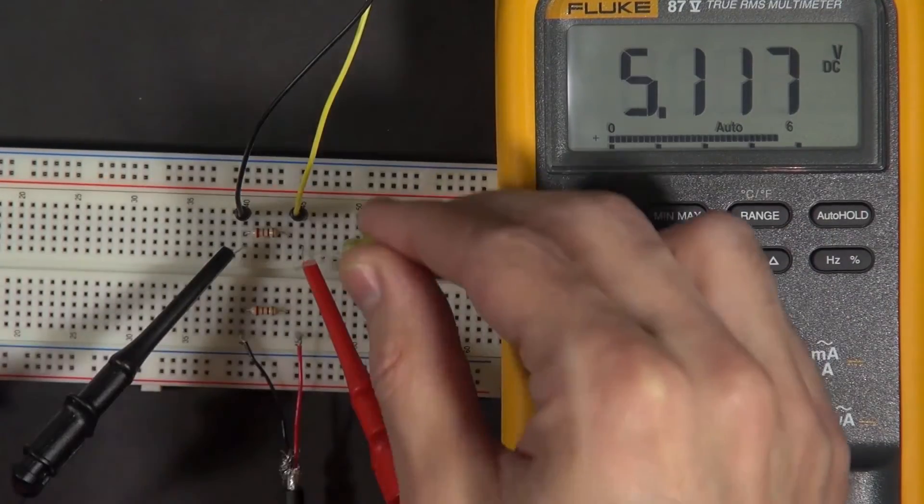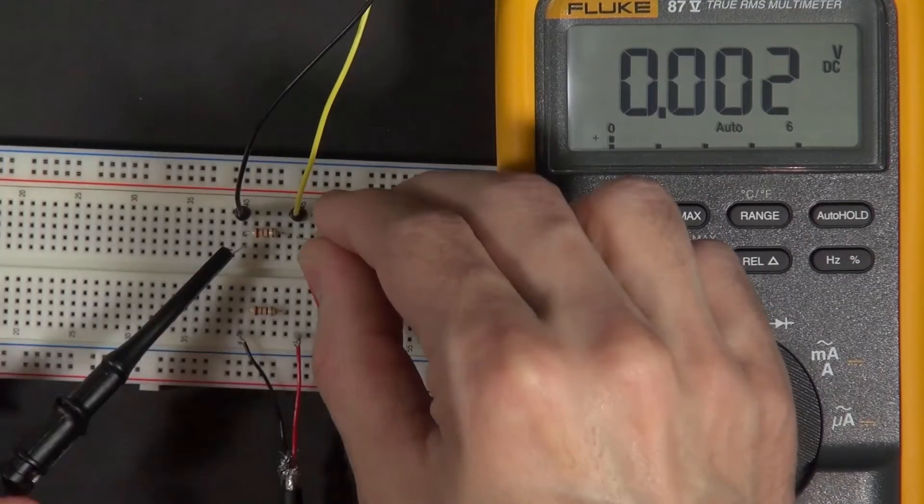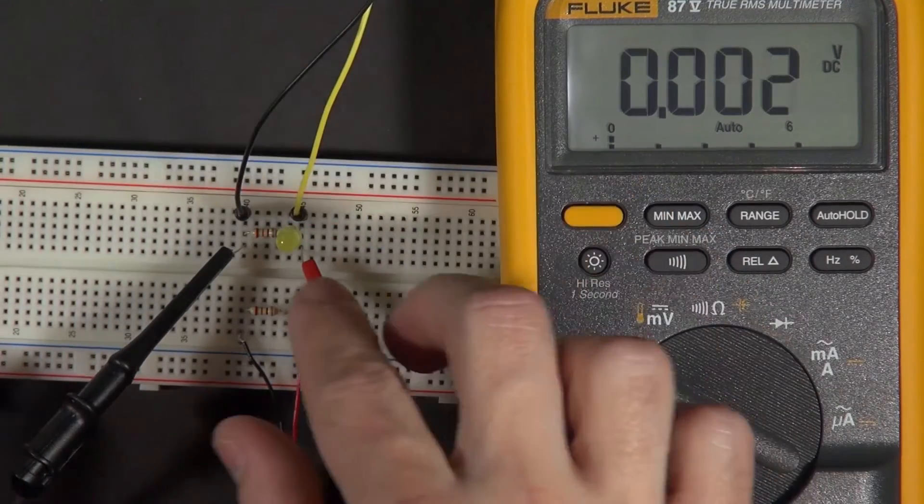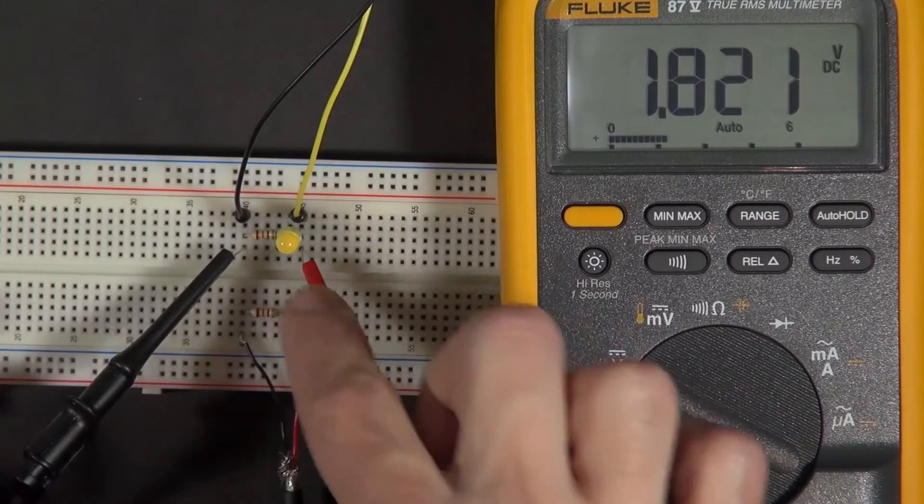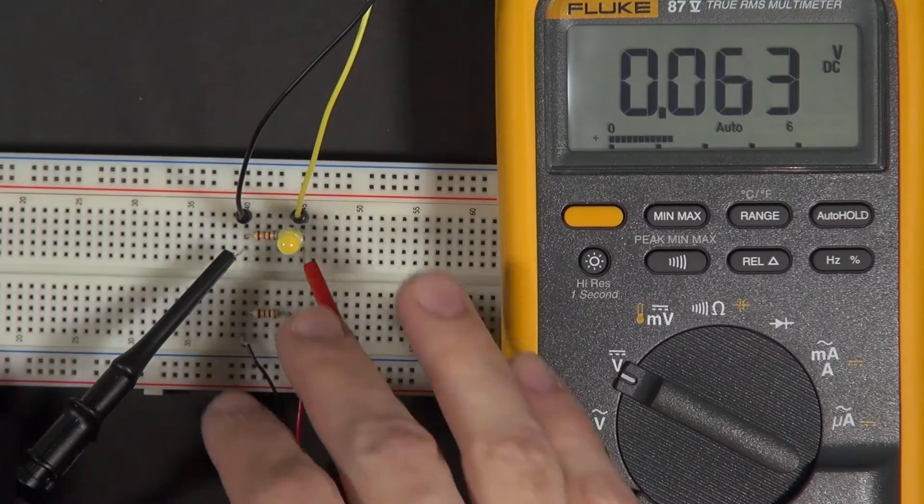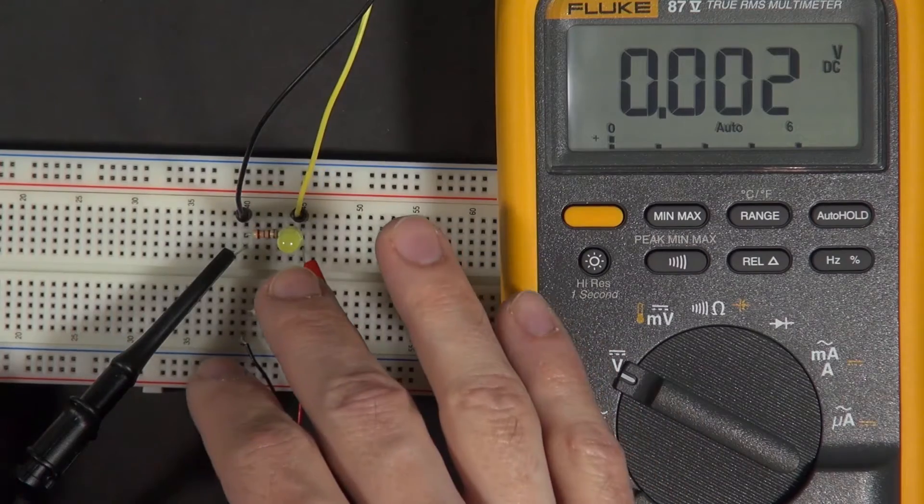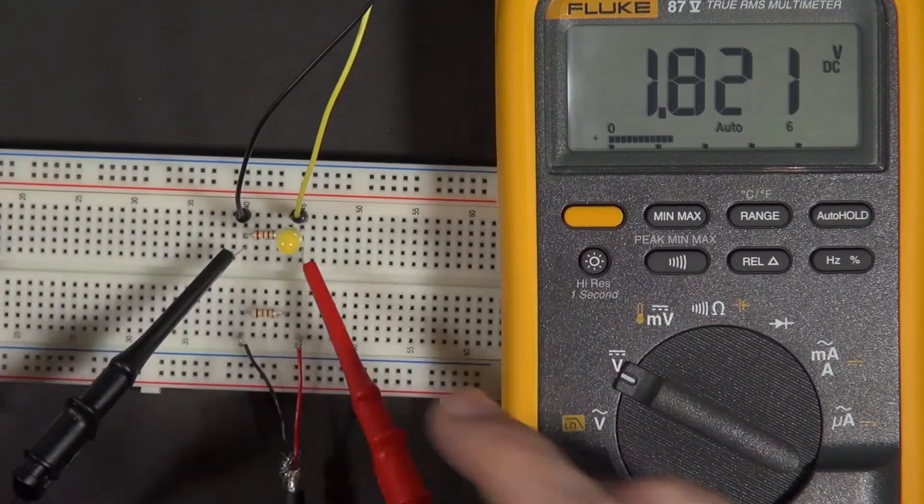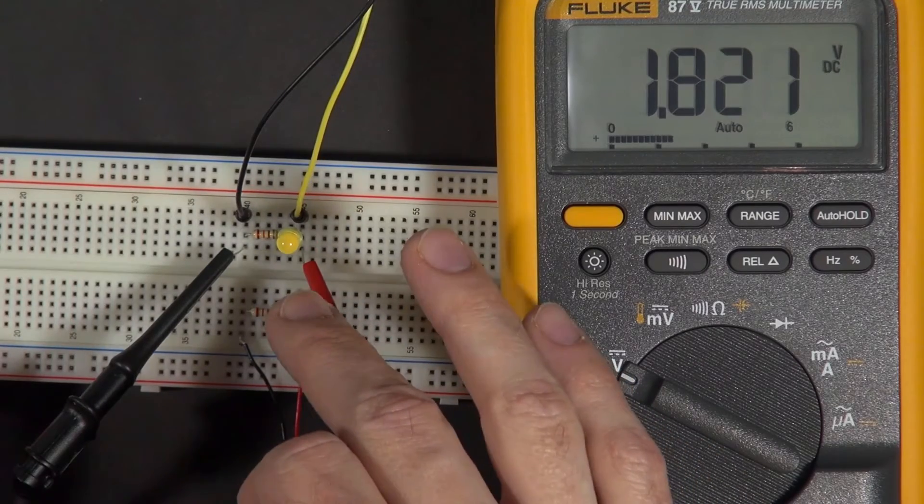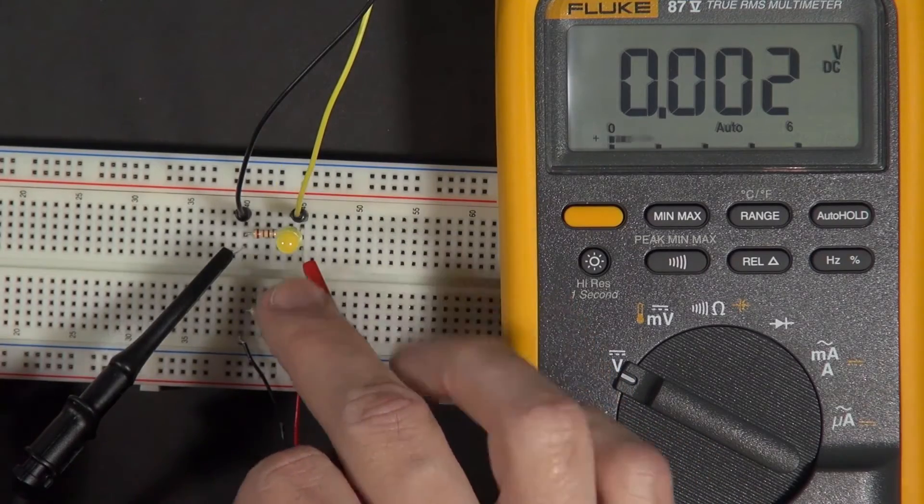But when I try to connect any kind of load like this LED to the signal, the LED tries to draw current in order to light up. It wants to draw 20 milliamps ideally. But there isn't 20 milliamps available. This signal just can't provide 20 milliamps. It can only provide almost a hundredth of that.